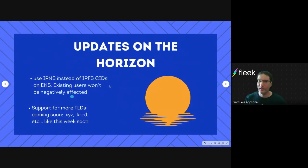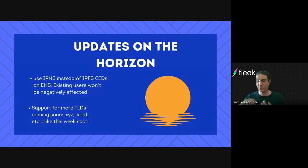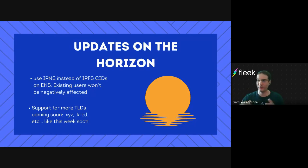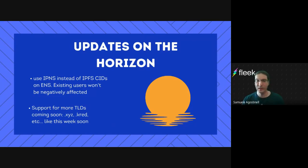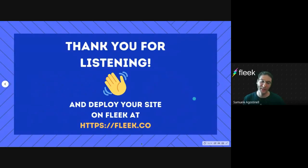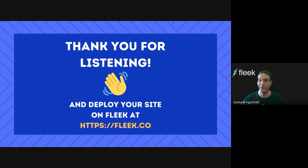The big update we want to make is to use IPNS instead of IPFS CIDs for our ENS integration. Existing users won't be affected — since we are the controllers, we can just change the IPFS hash for an IPNS address, and all new users can use IPNS. Nothing changes for users, they don't have to pay more. Also, soon we're going to support more top-level domains. Right now we can only use .eth, but once we push a new upgrade to production, it's going to include .xyz and others, hopefully this week or early next week.